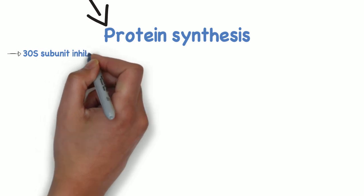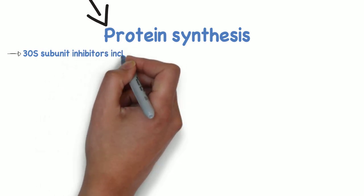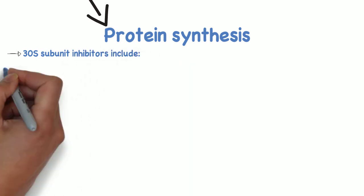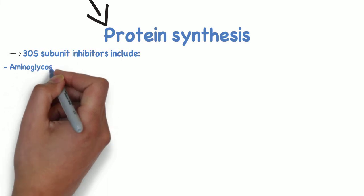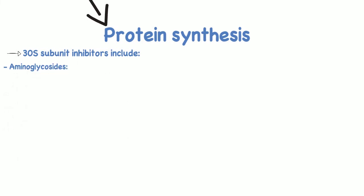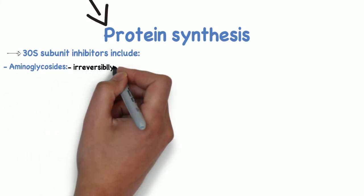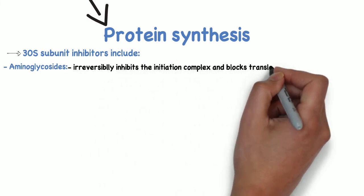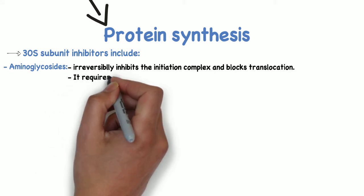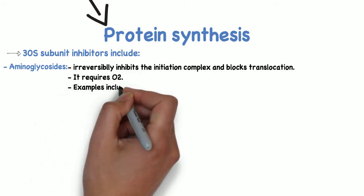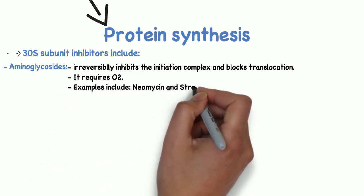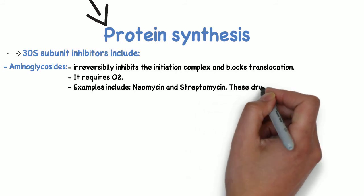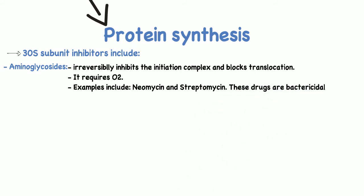Of the 30S subunit inhibitors, there are aminoglycosides which work by irreversibly inhibiting the initiation complex and blocking translocation. These antibiotics require oxygen, so they're ineffective against anaerobic bacteria. Some examples of aminoglycosides include neomycin and streptomycin, and these are bactericidal.